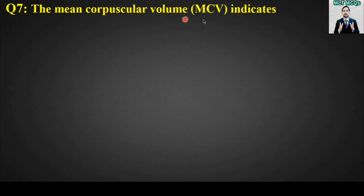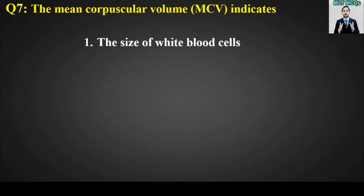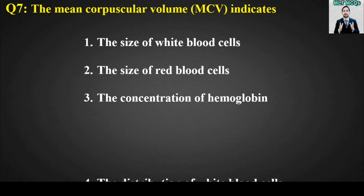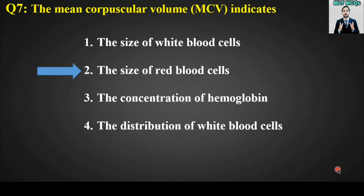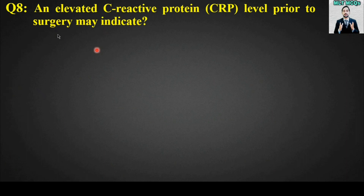MCQ number seven: The mean corpuscular volume (MCV) indicates what? Options: the size of white blood cells; the size of red blood cells; the concentration of hemoglobin. The right answer is option number two — the mean corpuscular volume (MCV) indicates the size of red blood cells.